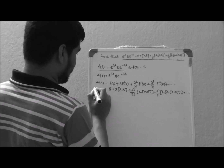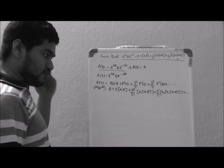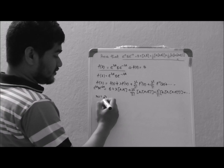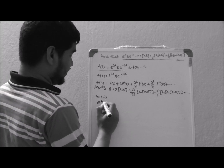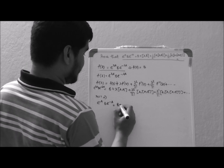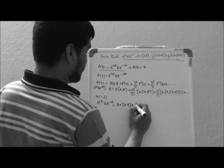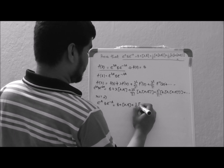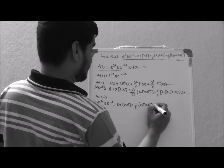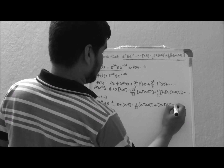This is e to the power lambda A, B, e to the power minus lambda A. So if we put lambda equal to 1, then e^A B e^(-A) is equal to B plus [A, B] plus 1 over 2 factorial [A, [A, B]] plus [A, [A, [A, B]]] and so on.